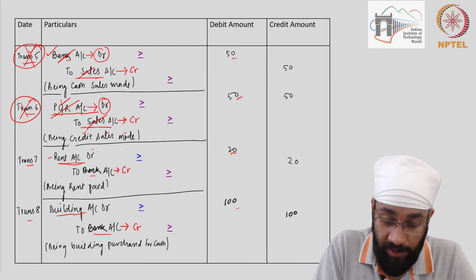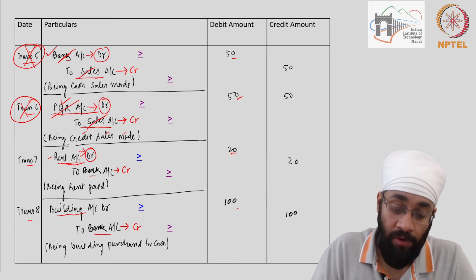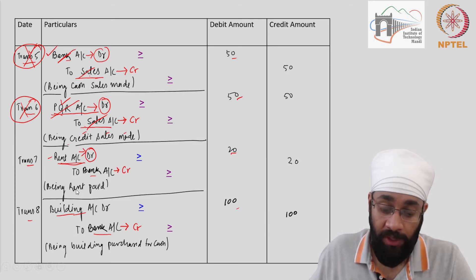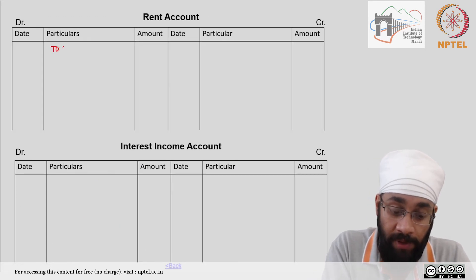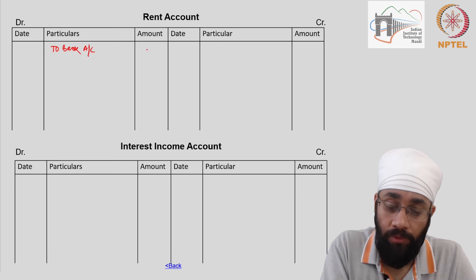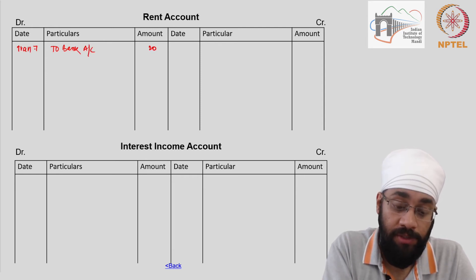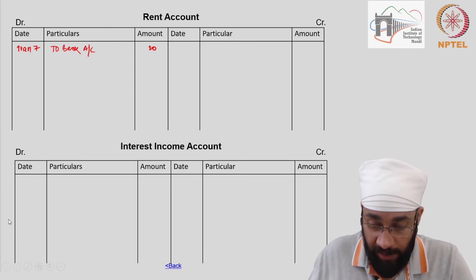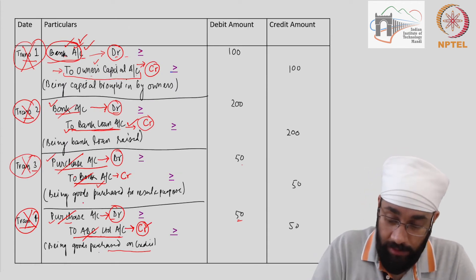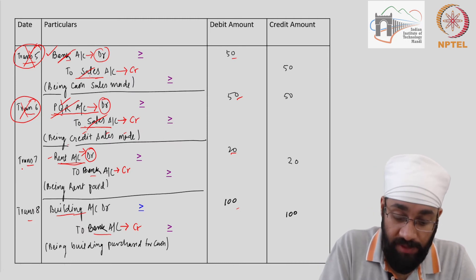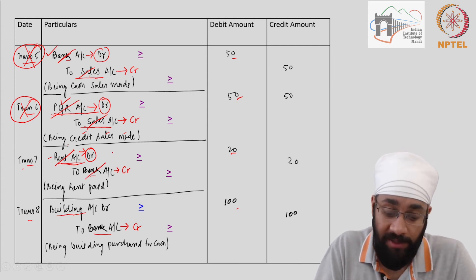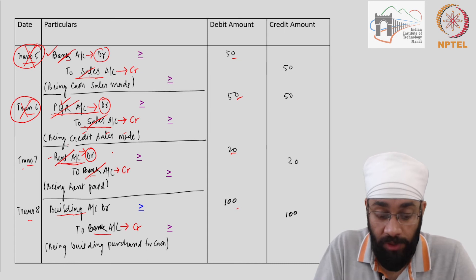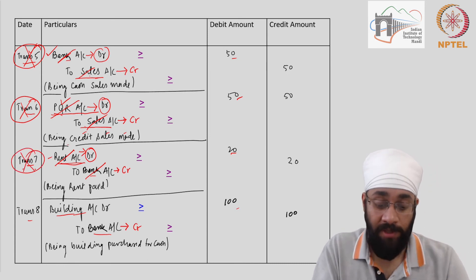Transaction 7: Rent account is debited. I go to the debit side of rent account and write 'To Bank, 20'. Here is my rent account — 'To Bank Account, 20', transaction 7, and we are done. Transaction 7 — rent account debit to bank — posting has been done in rent account, and for bank account we already did the posting in the previous video. Transaction 7 is complete.